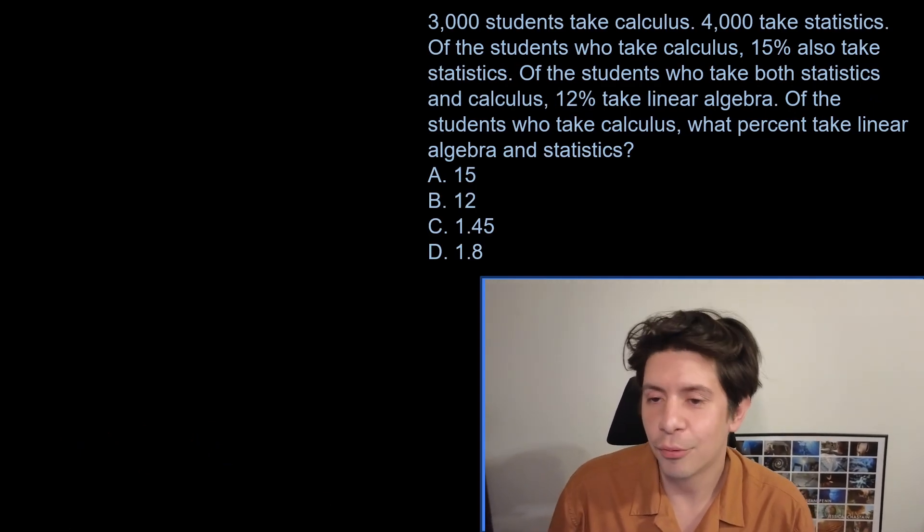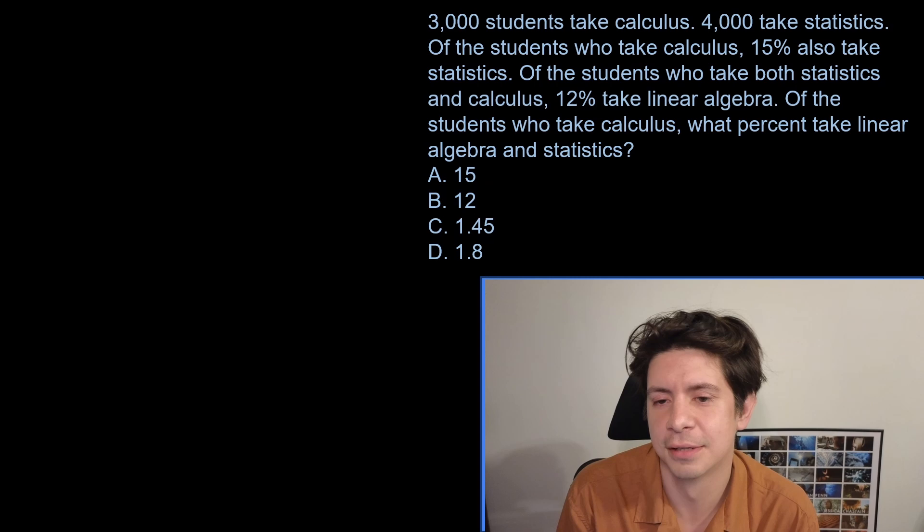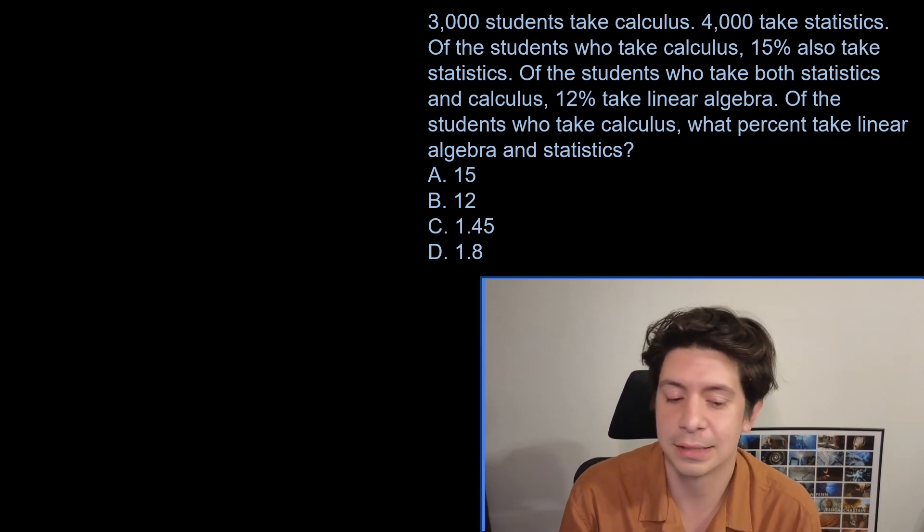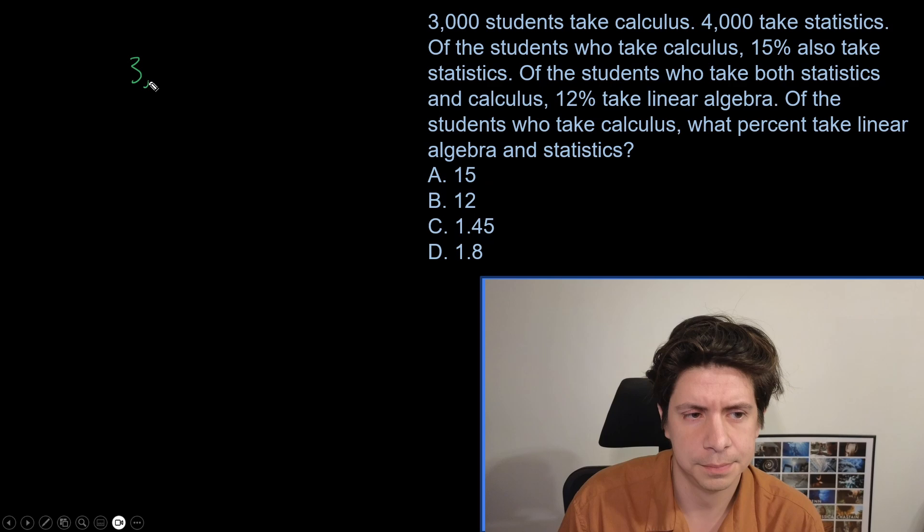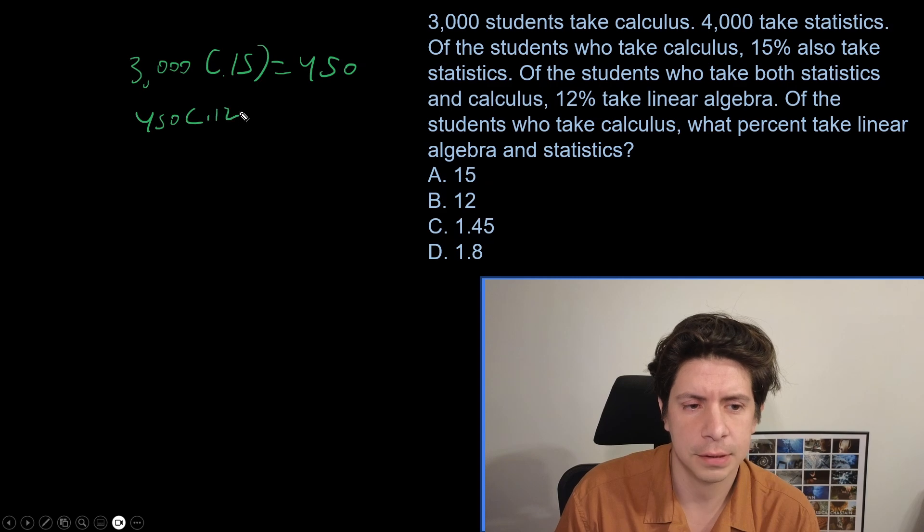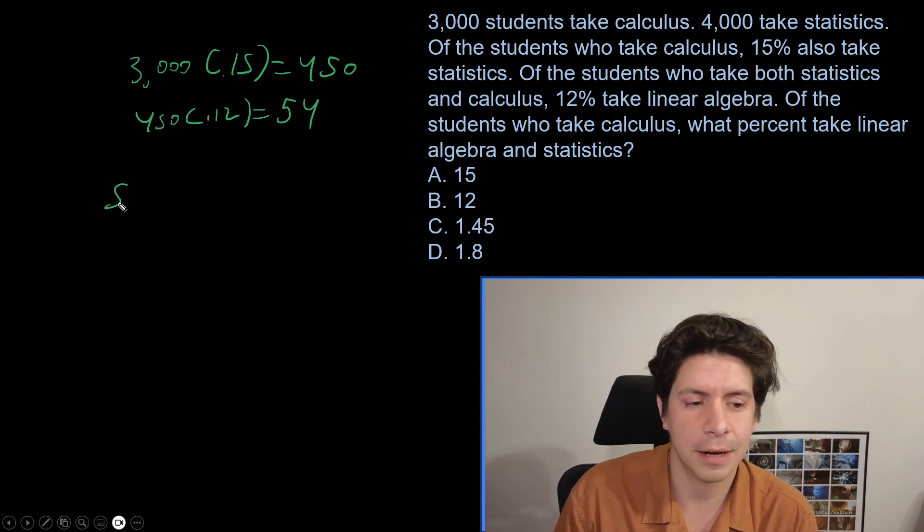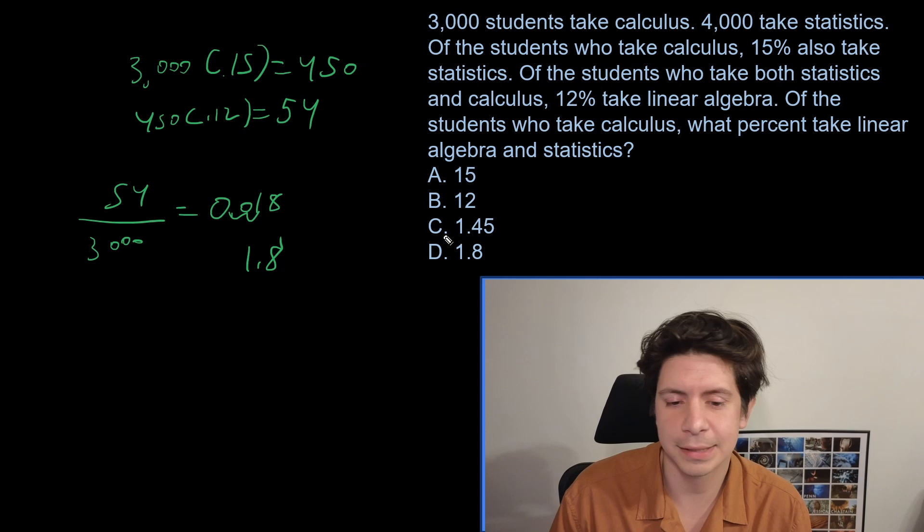And this is the last one. This is the easiest of the hard ones I found, but still a good challenge. 3000 students take calculus, 4,000 take statistics. Of the students who take calculus, 15% also take statistics. Of the students who take both statistics and calculus, 12% take linear algebra. Of the students who take calculus, what percent take linear algebra and statistics? So this is just about multiple percent changes. So 15%. So we have 3000, and 15% take statistics. So that's going to give us 450. Of those 450, 12% take linear algebra. So that's going to be 54. So we do 54 divided by 3000. And that is going to be 0.018. That's not an answer here, but it's in percentages. So we moved the decimal twice and we're going to get 1.8. That's going to be D.